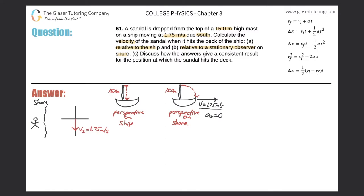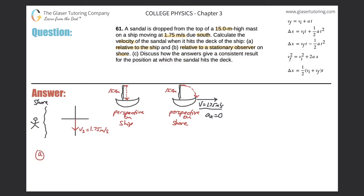Not only is the sandal dropping down in the Y direction, but the boat is also moving south — it also has a horizontal component to it — so the trajectory will look somewhat diagonal. We're going to get two different answers depending upon the perspective, and that's the whole point of the problem. So without further ado, let's take a look at letter A.